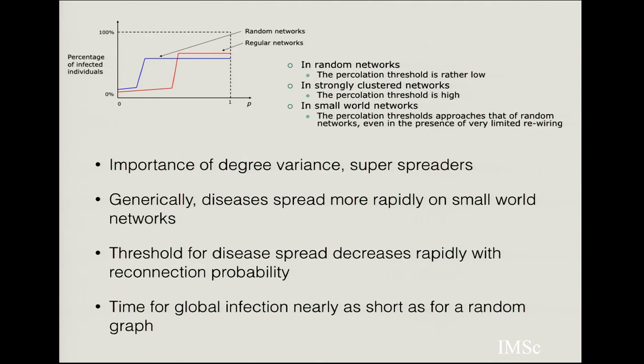Here is a quick summary of what is known. The degree of variance is important for understanding how disease might spread. The role of super-spreaders — nodes which are very highly connected — is very important in determining disease spread. Very generically, disease spreads more rapidly on small world networks. The threshold for spread, analogous to R0, decreases rapidly with the reconnection probability. The time it takes for infection is also nearly as short as in a random graph. This is bad news because if real social networks are better modeled as small world networks, controlling disease on such a structure becomes much harder.